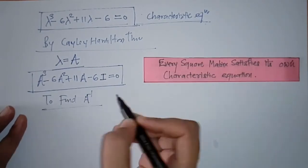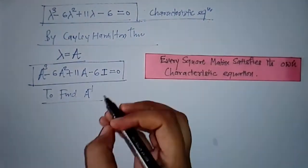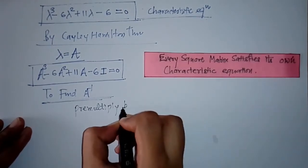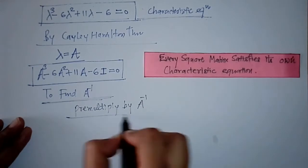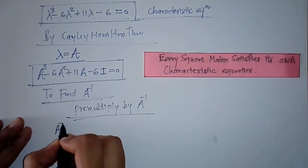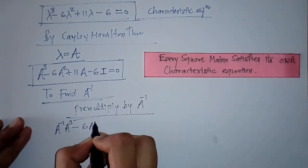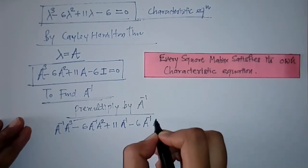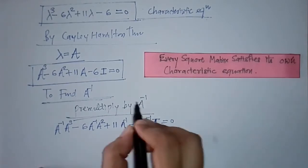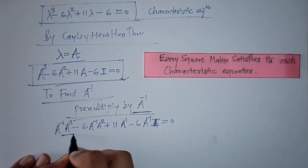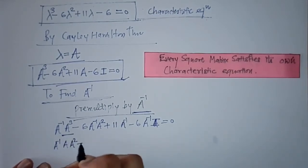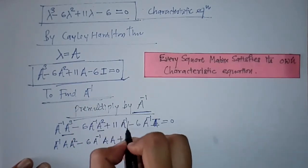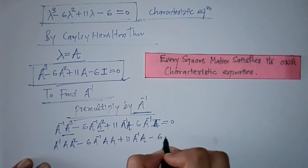Now to find A-inverse, we will pre-multiply the equation by A-inverse. We get A-inverse times A³, and we split A³ as A·A·A and A² as A·A. So after pre-multiplying this equation by A-inverse, we split up A³ accordingly.